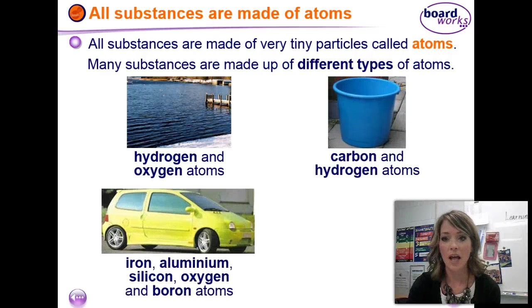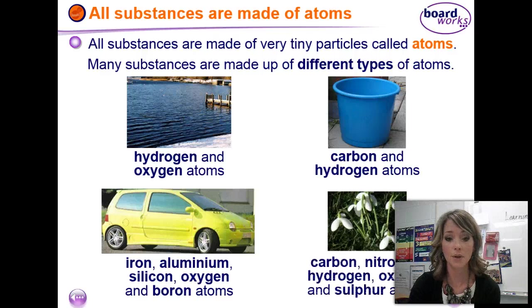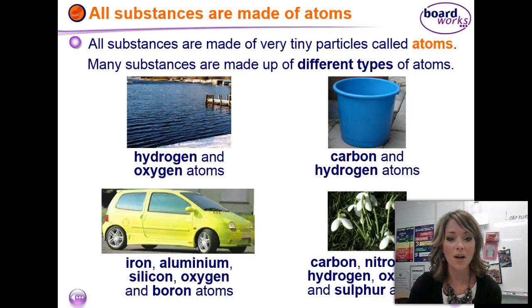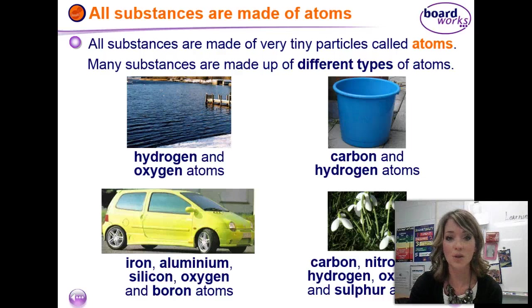Carbon and oxygen atoms are in CO2. The car contains iron, aluminum, silicon, oxygen, and boron atoms. And the flowers there contain carbon, nitrogen, hydrogen, oxygen, and sulfur.